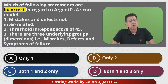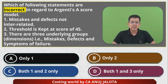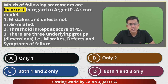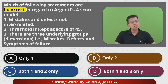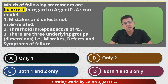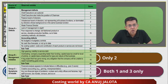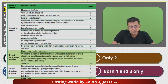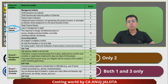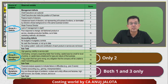Argenti's A-score was a model basically to find out whether the company is possibly heading towards bankruptcy. He said that if a company is heading towards bad times, there should be some indication of that, and so Argenti's A-score was calculated. He told a company is deemed to be safe when the total score is going to be 25 and not above that. But within 25, there were three groups. Group A consists of defects, group B consists of mistakes, and group C consists of symptoms of trouble.